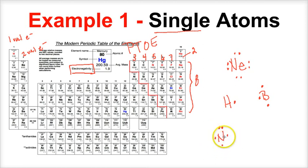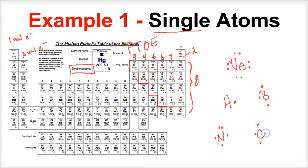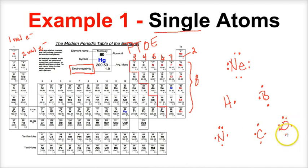For nitrogen with five valence electrons, place one on each of four sides, then pair up the fifth — this shows why nitrogen prefers three bonds, because it bonds through those three unpaired electrons. Carbon has four valence electrons, one on each side. Oxygen has six valence electrons — one on each side, then two pairs — which shows why oxygen likes two bonds: it has two unpaired electrons.